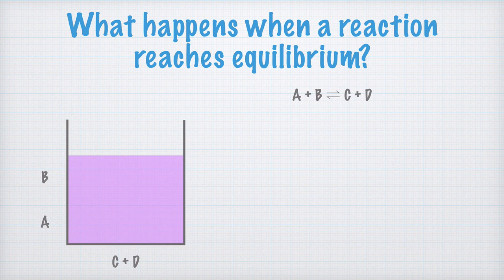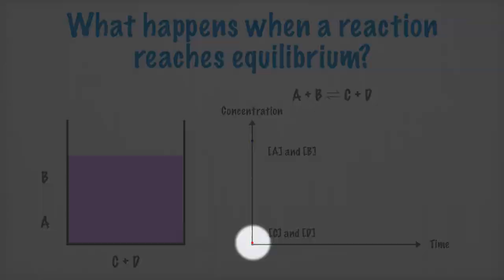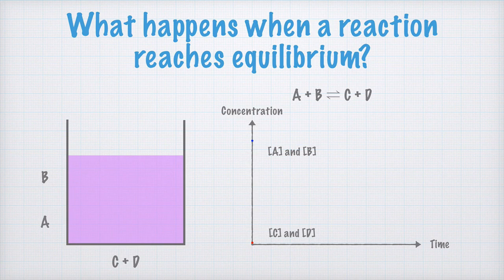But what is it that actually happens when the equilibrium is reached? Let's write a small graph here, which shows the concentrations of A and B and C and D and how they change over time. When I started by mixing A and B, there was no C and D at all. You can see that down here.